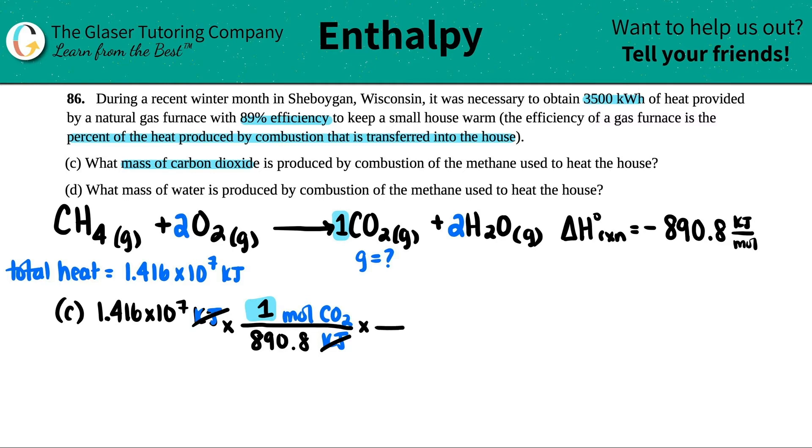And they just want to know the mass. So we know how to go from moles to a mass, aka a gram, right? Periodic table. Remember when you're using the periodic table, it's always one mole. And then just find the mass on the periodic table of CO2.